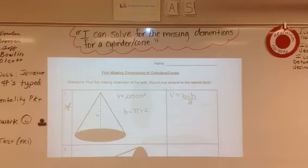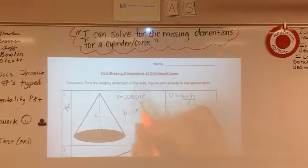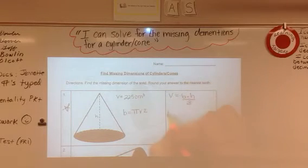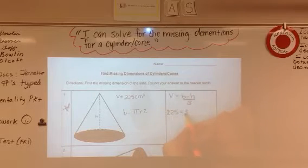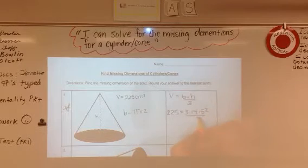So it's kind of hard to see but our radius is right here and it's five. So I'm going to go ahead and rewrite this. I'm going to put volume, which we know. So 225 equals my base, which is 3.14 times 5 squared times h divided by 3.